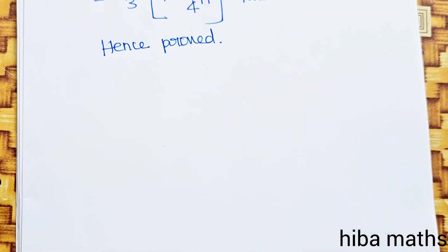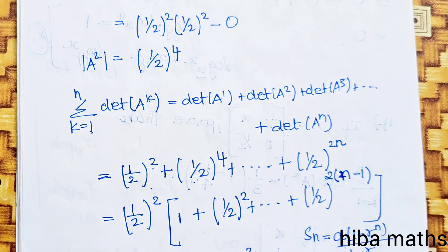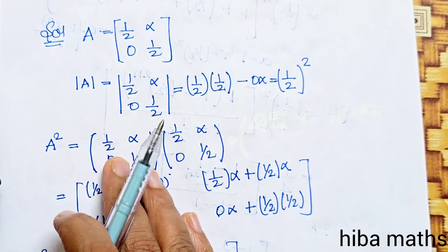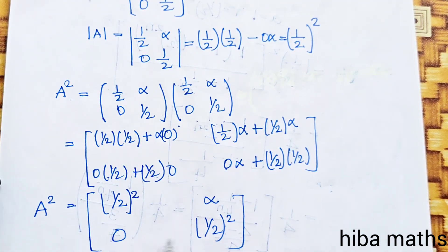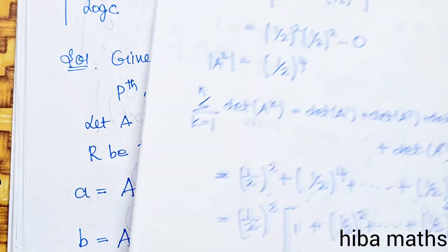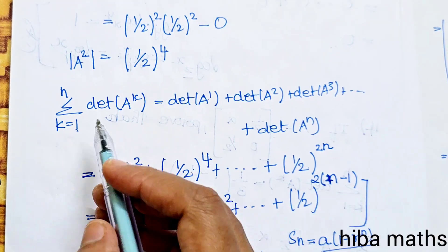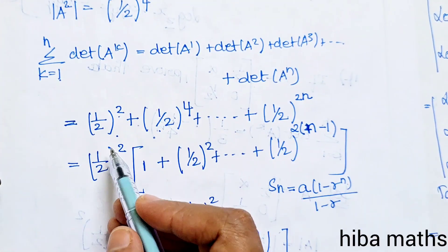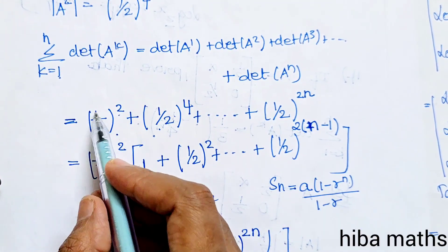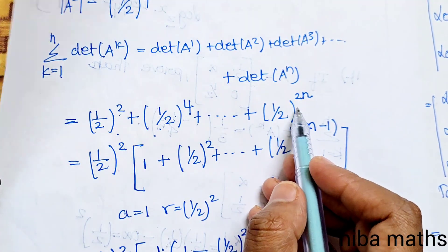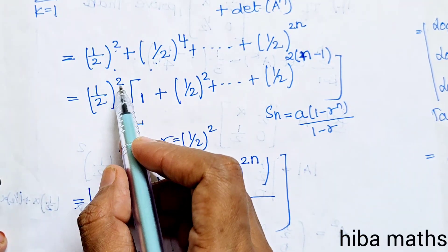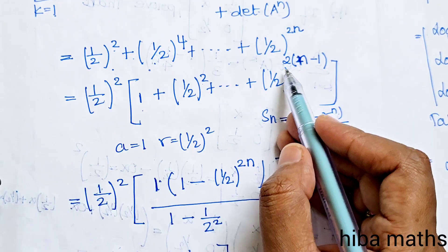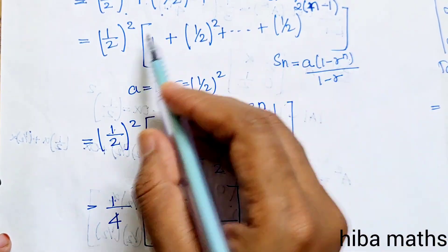In summary: we started with matrix A, computed A squared using the row-column method, found the determinant values det(A^k) = (1/2)^(2k), then summed them as a GP with a=1/4 and r=1/4, applied the formula S_n = a(1-r^n)/(1-r), and simplified to get the required result (1/3)(1-(1/4)^n).